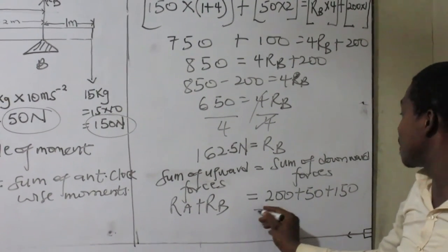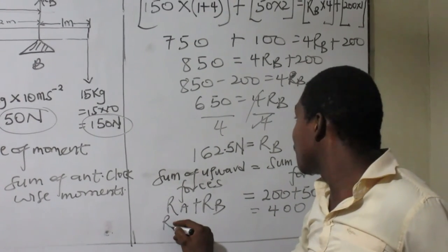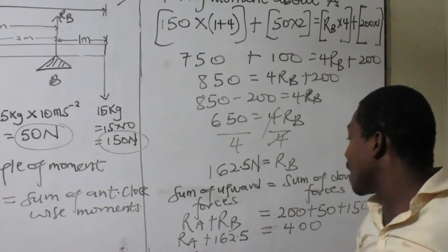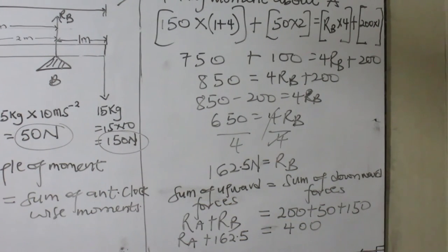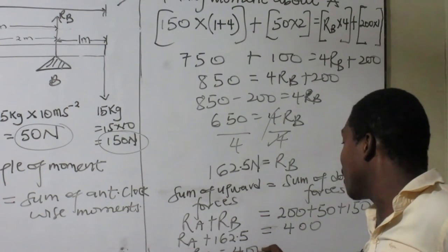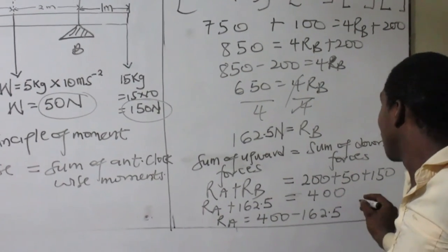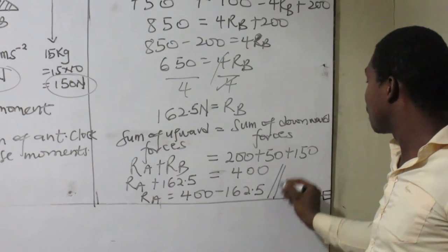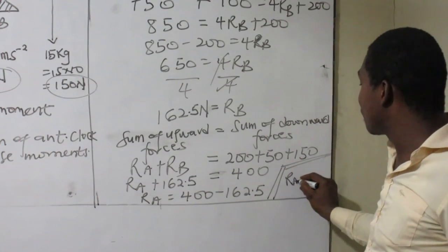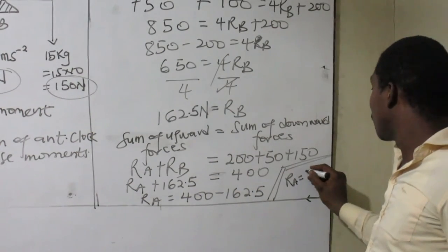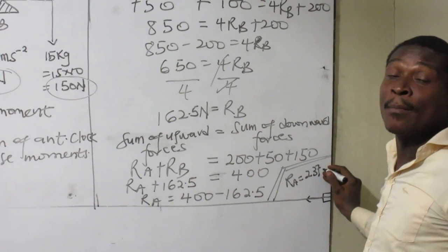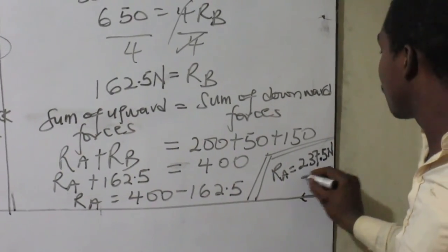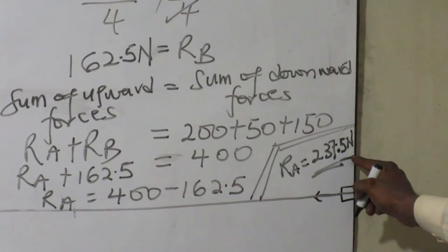RA plus RB equals 400. We know RB equals 162.5 N, so RA equals 400 minus 162.5. The reaction at A is 237.5 Newtons.